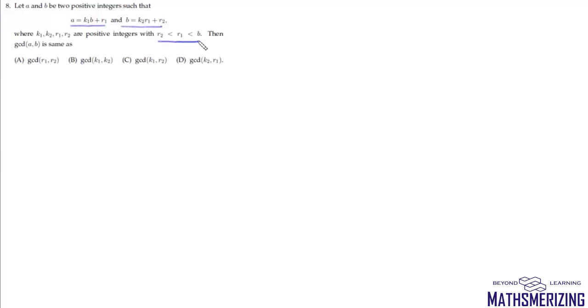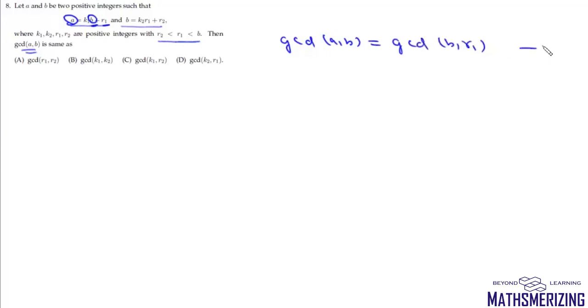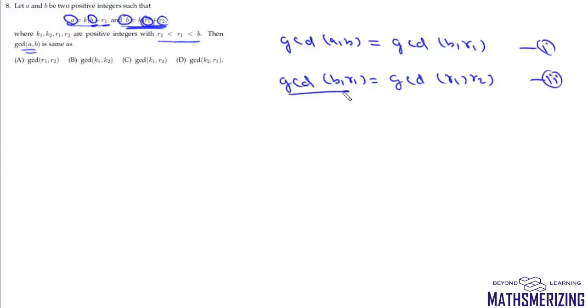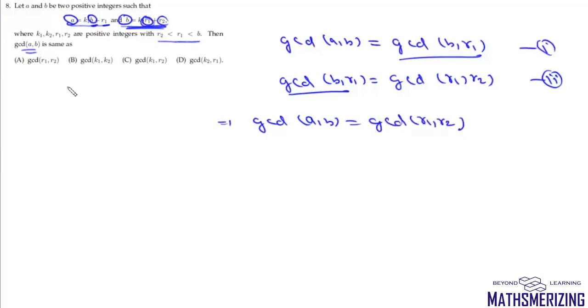Question 8: given A = K₁B + R₁ and B = K₂R₁ + R₂ with R₂ < R₁ < B, find what GCD(A,B) equals. From the Euclidean algorithm, GCD(A,B) = GCD(B, R₁), and GCD(B, R₁) = GCD(R₁, R₂). Therefore GCD(A,B) = GCD(R₁, R₂). That's option A.